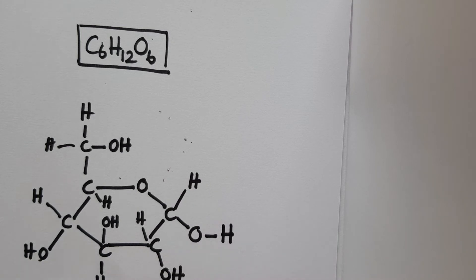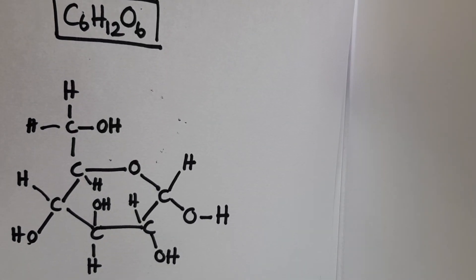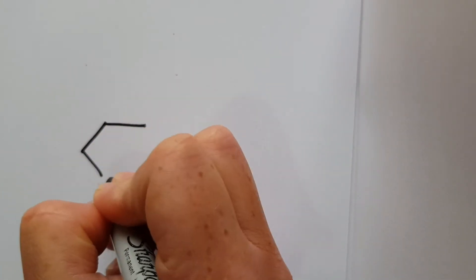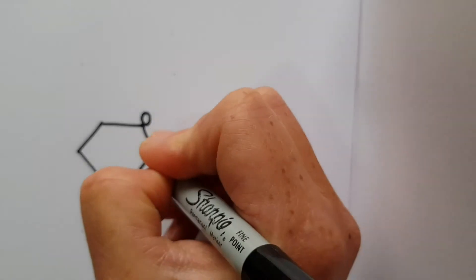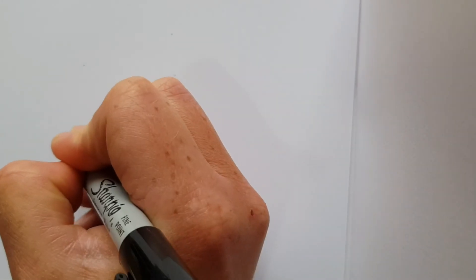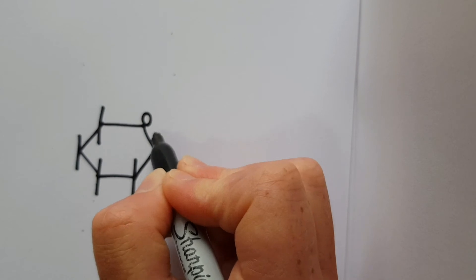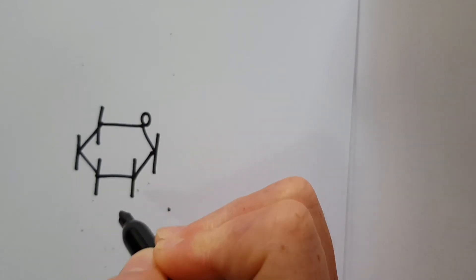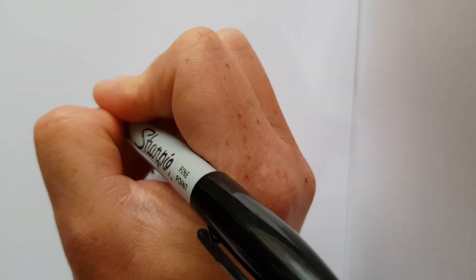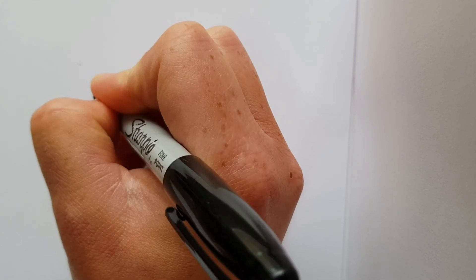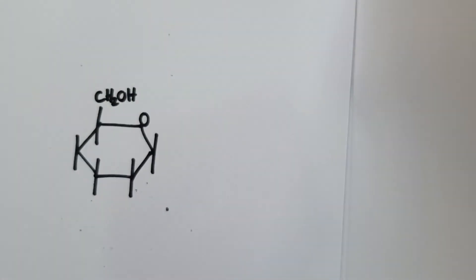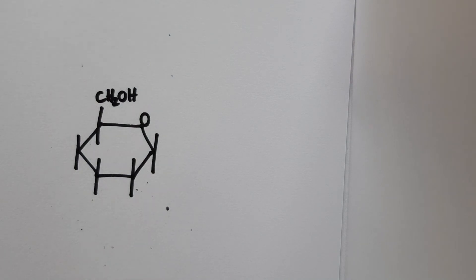And in addition to this, there is a slightly simpler way of drawing this structure, which I'm just going to quickly show you now. So instead of drawing out the whole thing like this, you can simply draw your hexagon, draw your oxygen in the top right, draw a line at each of those points to represent where there would be a carbon. And then knowing that each of these points here is bonded to a hydrogen and a hydroxyl group and then showing that off the top here, we have CH2OH. So that is an abbreviated way of showing glucose.